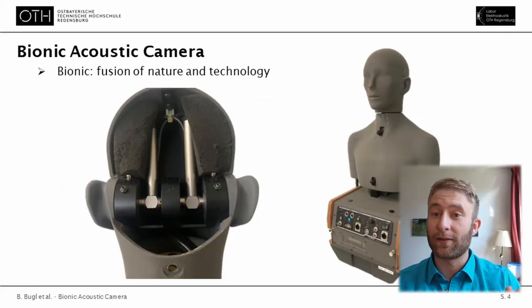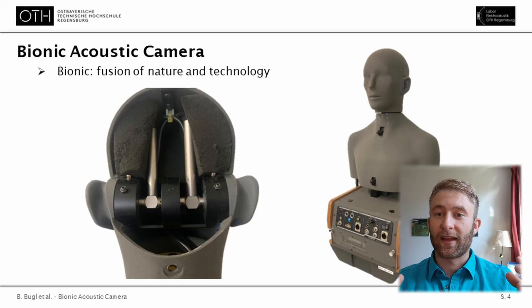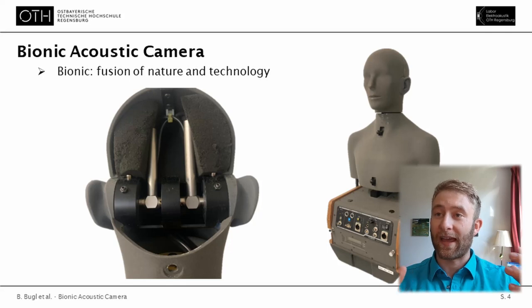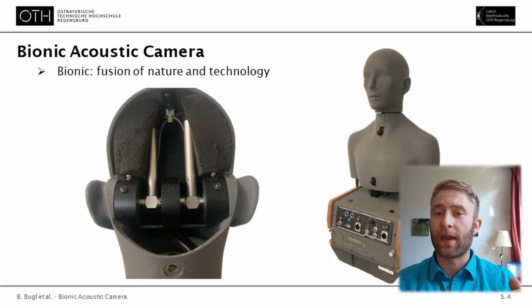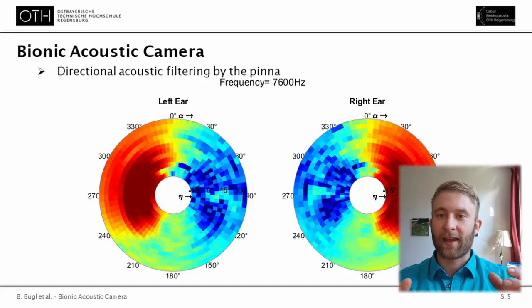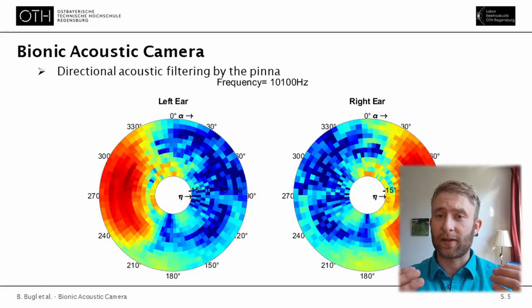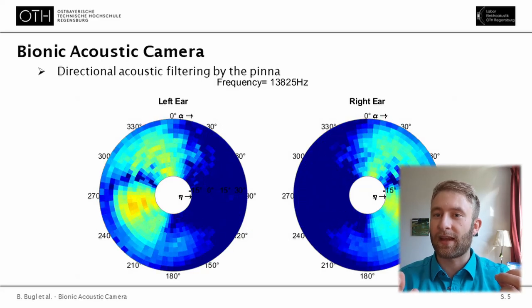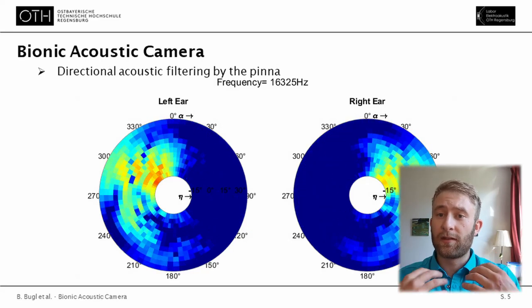So where does the word 'bionic' come into play? For the bionic acoustic camera, instead of using microphone arrays or clusters, we use sound from an artificial head — basically a mannequin with microphones inside the ears. The audio data from the artificial head contains the same spatial cues and spatial information that humans use for spatial hearing.